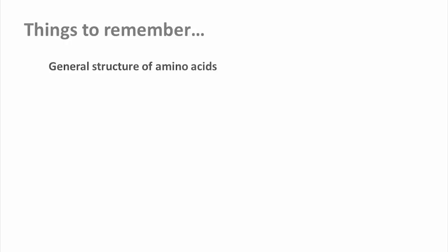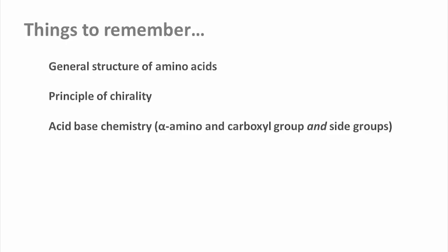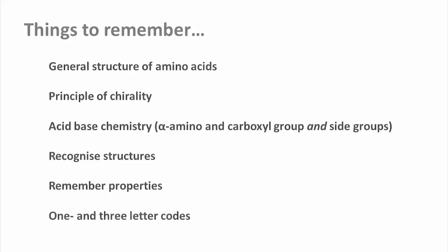So, that's a lot to remember. You should know the general structure of amino acids — that is, know that there is an alpha-carbon atom which has an amino group, a carboxyl group, a side chain, and an extra hydrogen atom bound to it. You should know that the alpha-carbon atom is asymmetric, and what the acid-base chemistry of amino acids and the side chains is. You don't need to be able to draw the structures from memory, but you should recognize them and remember what properties they have. And finally, the one- and three-letter codes of amino acids are essential knowledge.